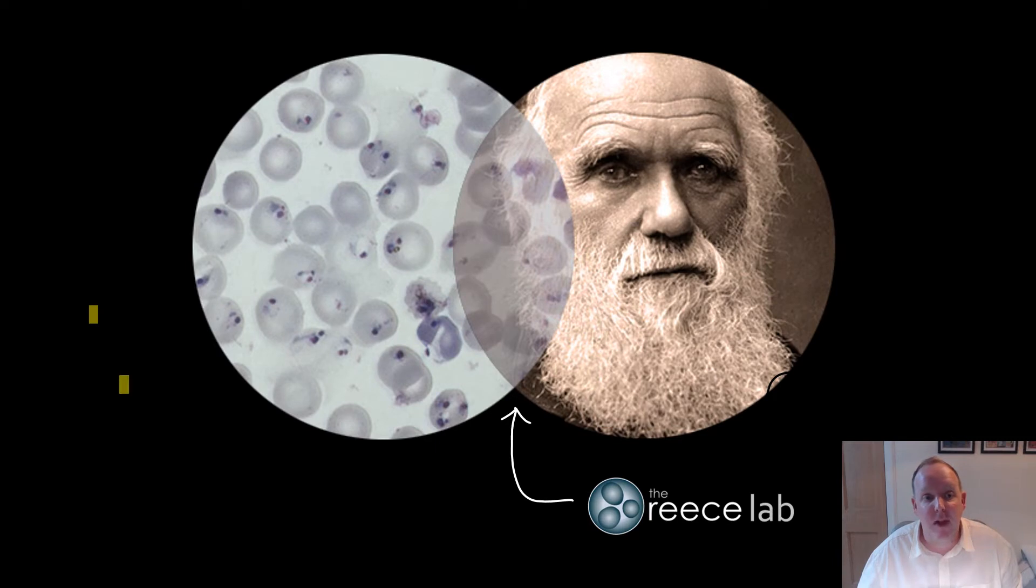In the Rees Lab, we apply an evolutionary approach to studying malaria and ask questions about what roles hosts and parasites play in shaping infection. If we can understand how and why parasites are doing what they're doing, we hope to make disease control measures more effective.